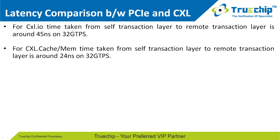We will now show a latency comparison between PCIe and CXL. With experience in PCIe implementation and verification, we have observed that the time taken for sending a transaction layer packet to the remote transaction layer, working at 32 GT/s for PCIe Gen5, is around 45 ns, while the same for CXL.Cache and Mem is around 24 ns at 32 GT/s. Thus, CXL is faster than PCIe and has lower latency.